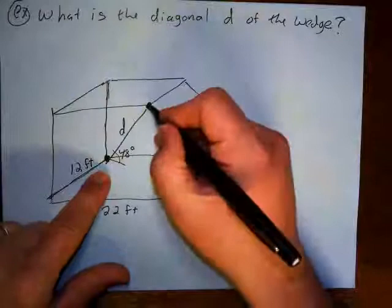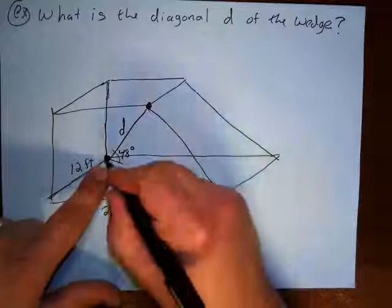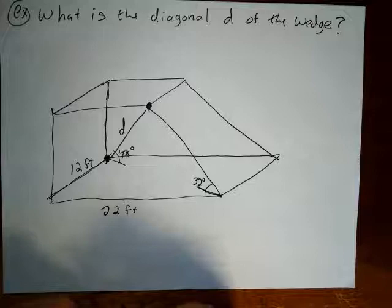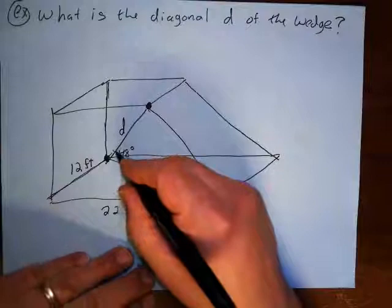And it wants to know what the diagonal is from this corner here to this corner right down there. This is the opposite. This is the one nearest us. And this is the lower back corner further away from us. And so this diagonal is going three-dimensionally through the wood. And it wants to know what is the length of that diagonal.